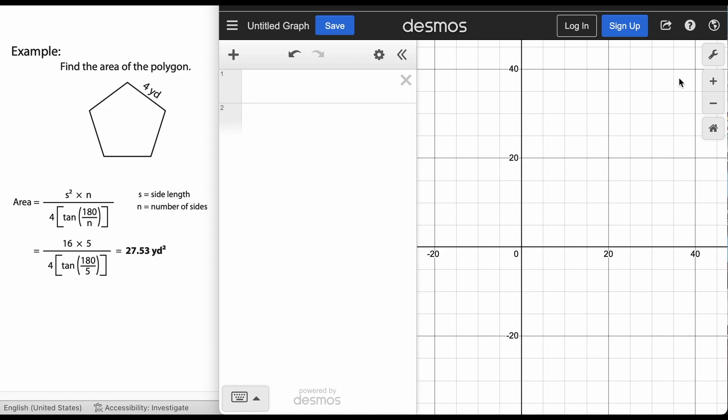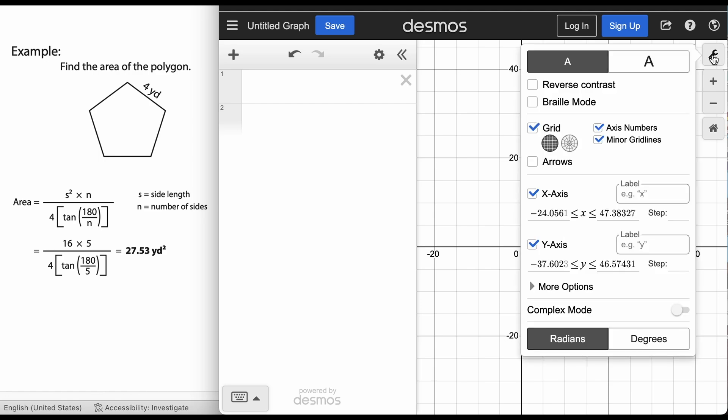Now first thing you're going to want to do before you start this problem is to click on the little tool right here so that we can make sure we are in the right mode. Down here at the bottom of that tool choice we have radians or degrees. Click on degrees because these problems need to be done in degrees.